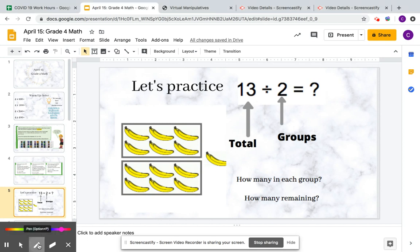If I was going to write on my paper, how many in each group? There's 6 in each group: 1, 2, 3, 4, 5, 6. How many are remaining? I see that there's 1 left over.